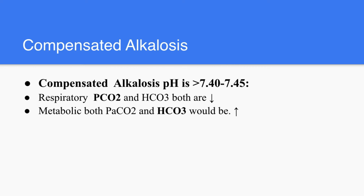What makes it partially or fully compensated is the pH value. If the pH value is still not within normal — 7.35 to 7.45 — then there is a problem and this would be partially compensated, and you find both parameters high or both low according to the initial problem. In case of partially compensated and fully compensated, the parameters go together, either up together or low together. If you find PaCO2 going up and carbon dioxide going down, this is called mixed acid-base disturbance.